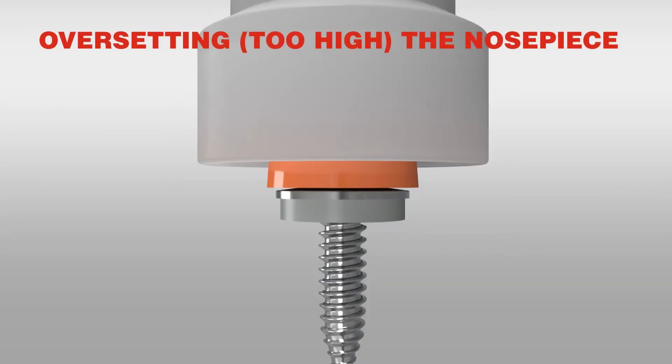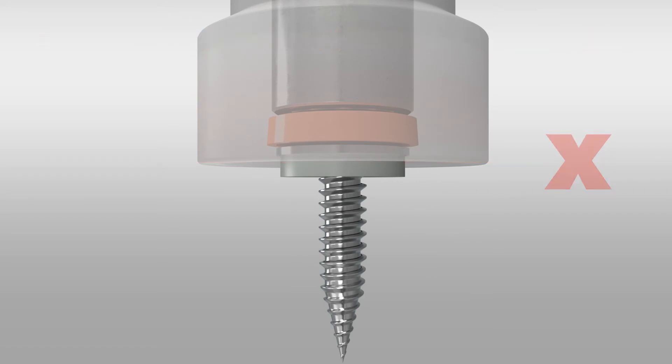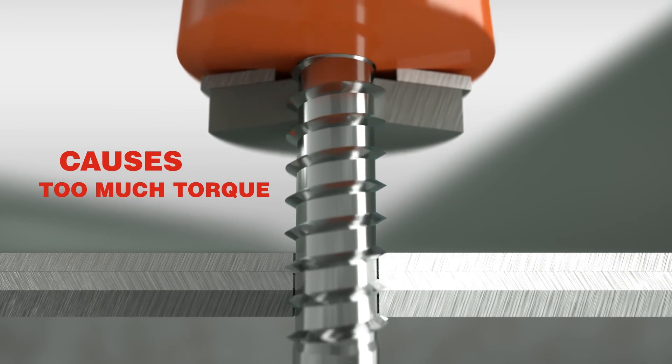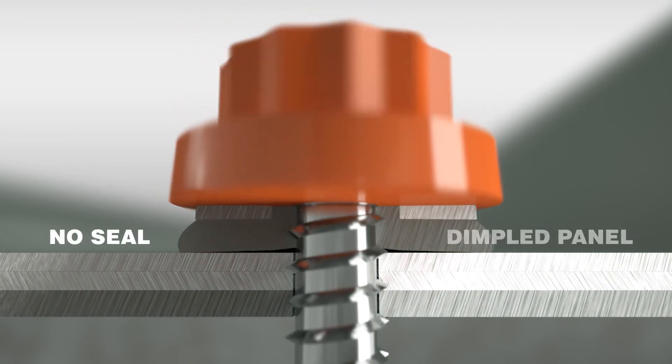Over setting the nose piece will result in the fastener stripping out. No seal, thread engagement gone. That's because the fastener has drilled beyond optimum compression and to the point there is no material left to engage the fastener thread.